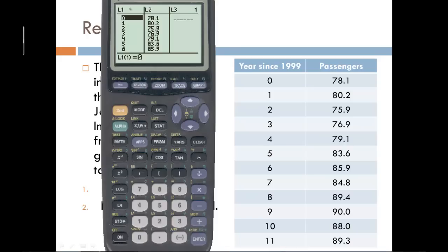So in the list 1 column, I've entered in the X values, so the year since 1999, so that's zero up through 11. And in the L2 column, I've entered all the passenger amounts.